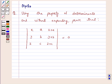Let's start the solution. Let delta equal our given determinant, that is x, a, x plus a; y, b, y plus b; z, c, z plus c.